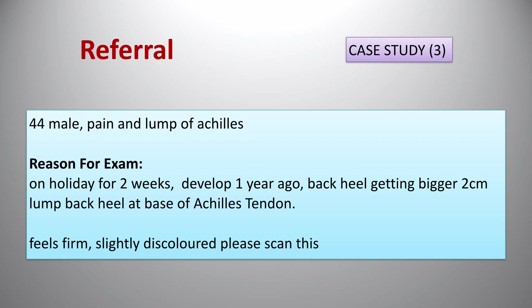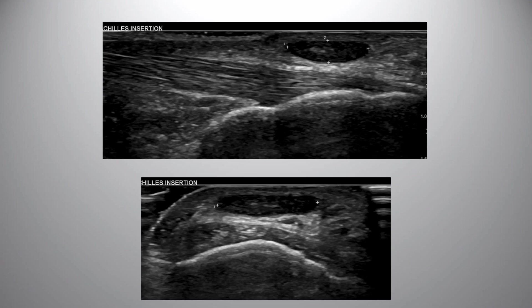The final case: an inactive, middle-aged, slightly overweight diabetic patient. He went on holiday a year ago and developed some swelling at the base of the Achilles tendon that became firmer and slightly discoloured — not a clear clinical diagnosis. On imaging, at the insertion superficial to the Achilles there is a hypoechoic lesion with posterior acoustic enhancement, measuring approximately 10 mm by 12 mm. The location is consistent with the subcutaneous calcaneal bursa, assessed in both long and short axes.